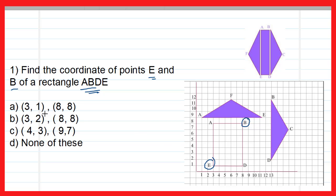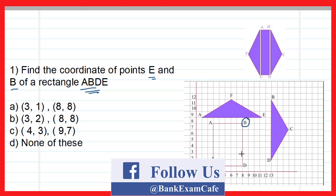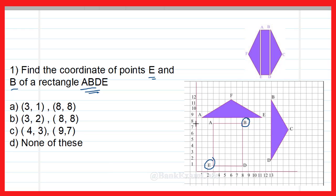First we will find the coordinates of point B. The x-coordinate is the distance from the y-axis, and the y-coordinate is the distance from the x-axis. Here both distances are equal, so the coordinates of B will be (8, 8).